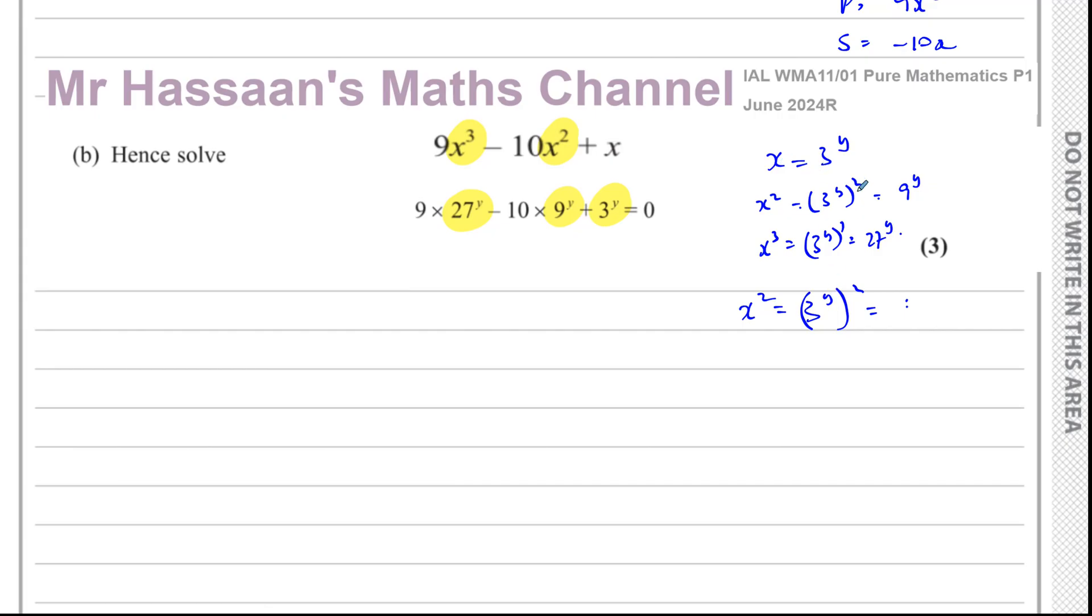This is cubed here. So if we let x equals 3 to the power of y, we can replace the 3 to the power of y with x. And if we let 9 to the power of y be the same as 3y squared, we can replace that with x squared. So this is minus 10 times x squared. And we can see that 27 to the power of y can be expressed as x cubed. So this is 9 times x cubed. So we have 9x cubed minus 10x squared plus x equals 0.